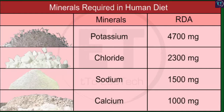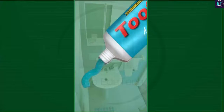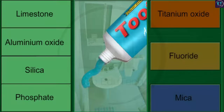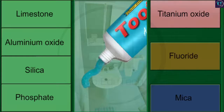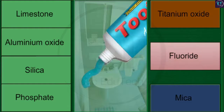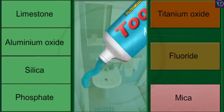You will be surprised to know how many different minerals you use in everyday activities. For example, brushing your teeth. The toothpaste you use contains limestone, aluminium oxide, silica and phosphate minerals for cleaning, titanium oxide for its white color, fluoride to prevent cavities, and mica for sparkle.